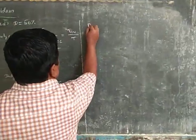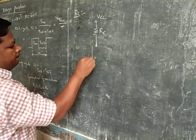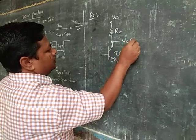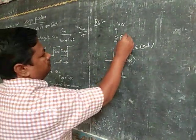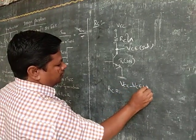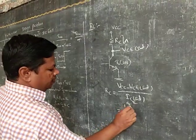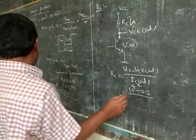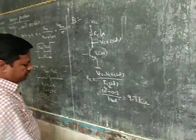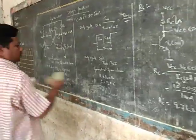First, calculate RC. Consider this configuration: VCC and RC. Suppose T2 is on; here it is VCE saturation. Simply apply KVL to the output loop. Then RC is equal to (VCC minus VCE saturation) divided by IC saturation — that is (10 minus 0.3) divided by 1 milliampere, which equals 9.7 kilo ohms. So RC value is equal to 9.7 kilo ohms.